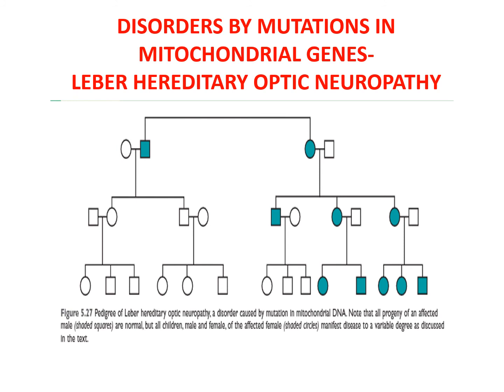Next are disorders caused by mutations in mitochondrial genes, best exemplified by Leber hereditary optic neuropathy. Diseases associated with mitochondrial inheritance are rare and many of them affect the neuromuscular system. Leber hereditary optic neuropathy is the prototype of this disorder — a neurodegenerative disease that manifests as progressive bilateral loss of central vision. Visual impairment is first noted between ages 15 and 35, eventually leading to blindness. Cardiac conduction defects and minor neurologic manifestations have also been observed in some families.